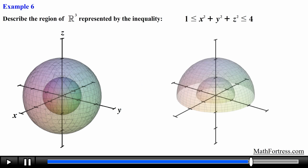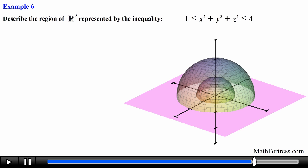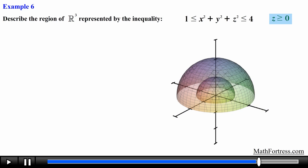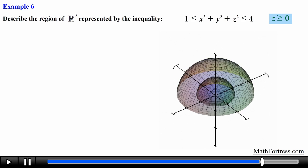Say that we only want the upper half of these spheres — all points above the xy plane. We include an additional inequality: z is greater than or equal to 0, restricting the values of z to positive values only. Doing that we obtain a graph showing only the upper hemispherical shell between the two sphere surfaces.